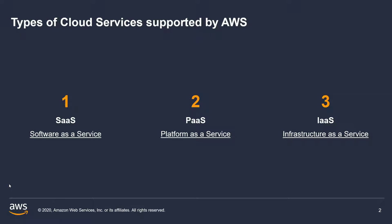The first one is SaaS, software as a service. This is going to remove your necessity to constantly maintain the software itself. You have to worry about bugs, patches, and configuration — how you're going to configure that application, that web server, that database server. With SaaS, the software is owned by the provider, by AWS. You don't have to maintain licenses or configuration. Your users simply access the interface to that software over the internet, but you don't control how it's configured, when it's patched, or when outage windows are. You don't have to maintain anything.